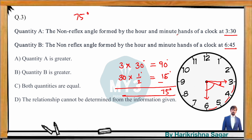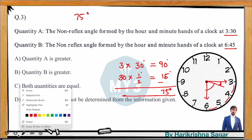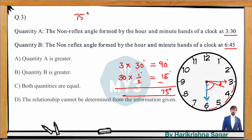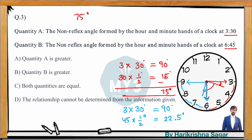For Quantity B at 6:45: hour hand at 6, minute hand at 9, gap of 3 hours = 90 degrees. With 45 minutes of tilt: 45 × 0.5 = 22.5 degrees. The hour hand moves towards 7, so we subtract: 90 − 22.5 = 67.5 degrees. Quantity A (75) is greater than Quantity B (67.5), so the answer is Quantity A is greater.